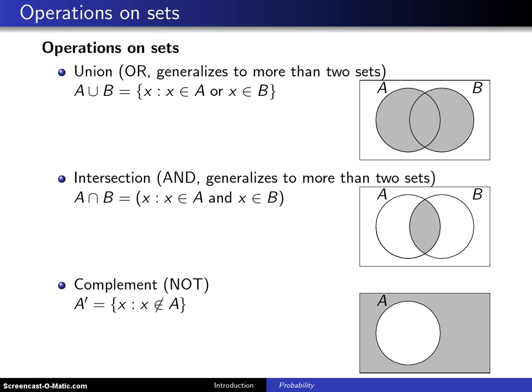The first operation is union, and when you hear union, you can think of the word or. This particular operation generalizes to more than two sets. But in the case of two sets, A union B is the set of all X such that X is an element of A or X is an element of B. And that is indicated by the shaded area on the Venn diagram on the right.